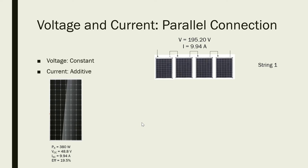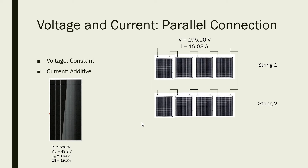We call this string number one. Suppose we add another string — another set of solar panels connected in series — and connect that in parallel to string number one. As we have said, the voltage is constant, so the voltage across this solar panel array didn't change; it's still 195.20 volts. But the current is additive, so before it was 9.94 amps, and connecting another string makes it 9.94 times 2, which is 19.88 amperes.